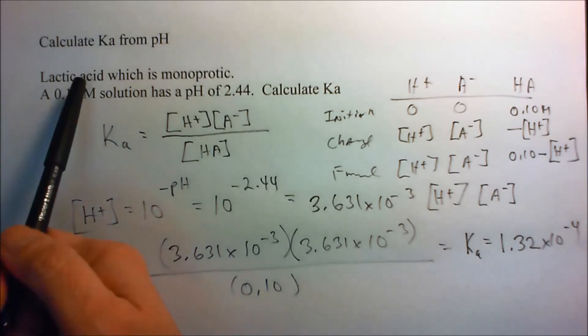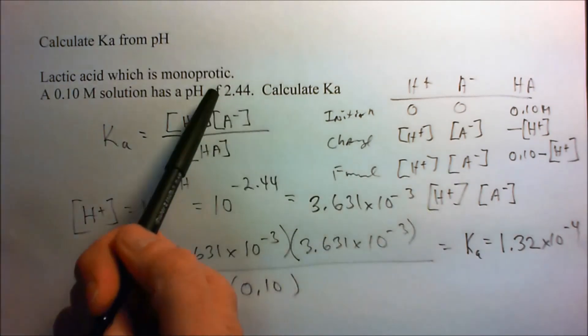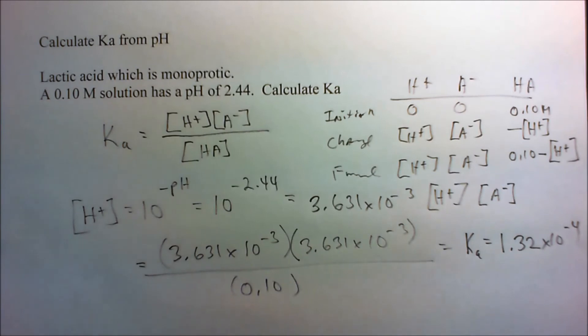There's our Ka for lactic acid, or really any acid that's monoprotic in a 0.1 molar solution with a pH of 2.44.